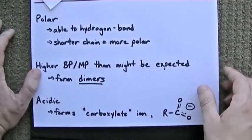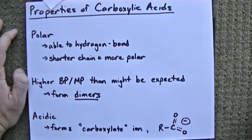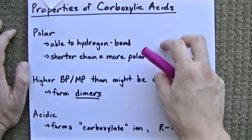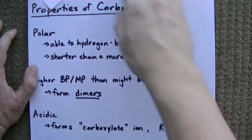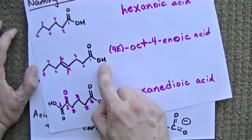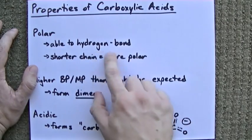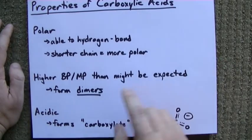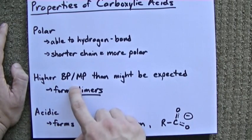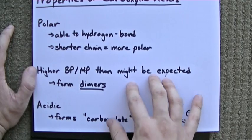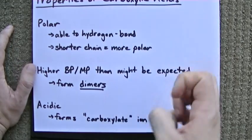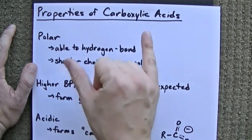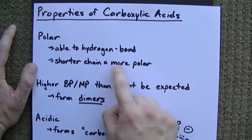Last thing I want to point out to you are the properties of carboxylic acids. Now clearly, because we have a bunch of oxygens at one end of the molecule, it's going to be very polar. In addition, the OH bonds mean we're allowed to hydrogen bond the molecules together. This gives them higher melting and boiling points than even you might expect because the molecules are sticking together. Back to polarity, the shorter the chain, the higher the polarity.